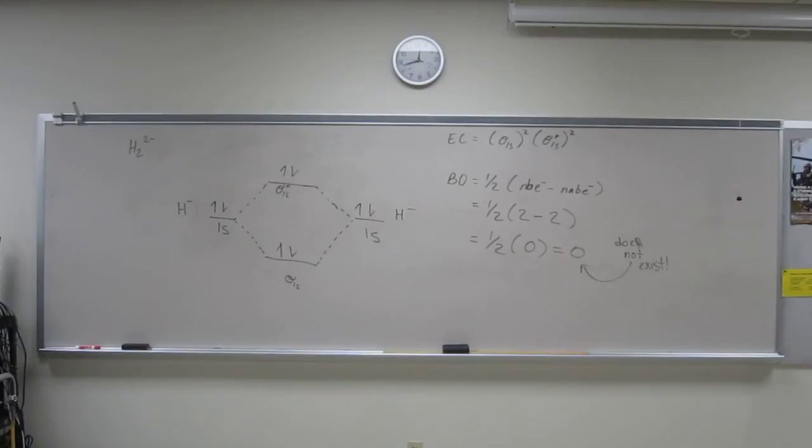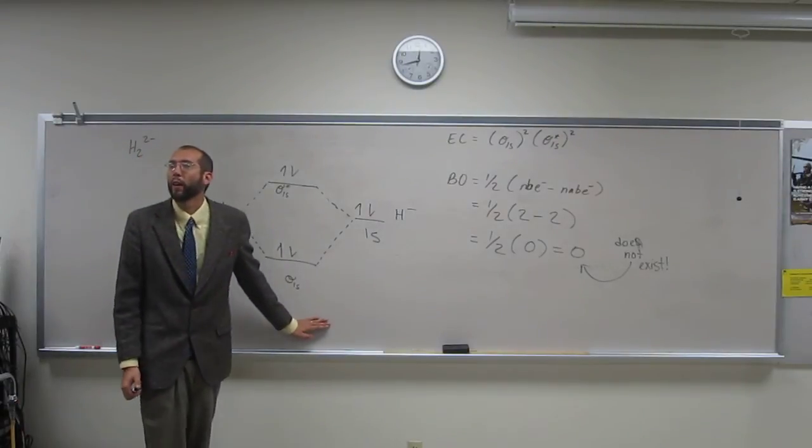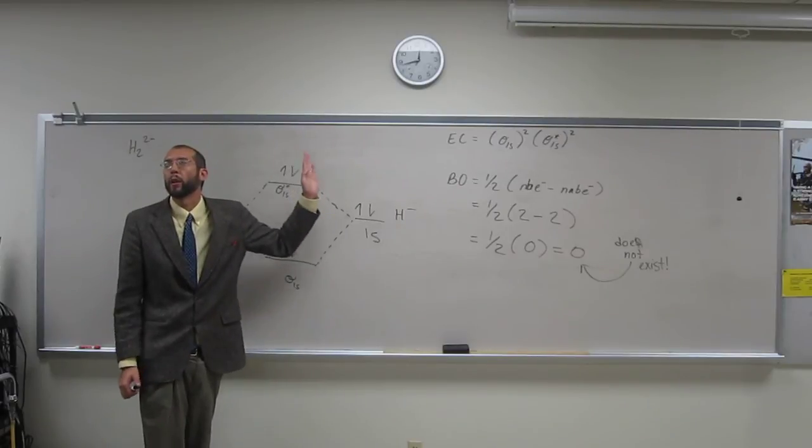It's the top. The antibond is the bottom. The bottom. Oh yeah, so okay, the stars are the antibonding. Yeah, the ones. So the bond is, of course, lower in energy than the antibond.